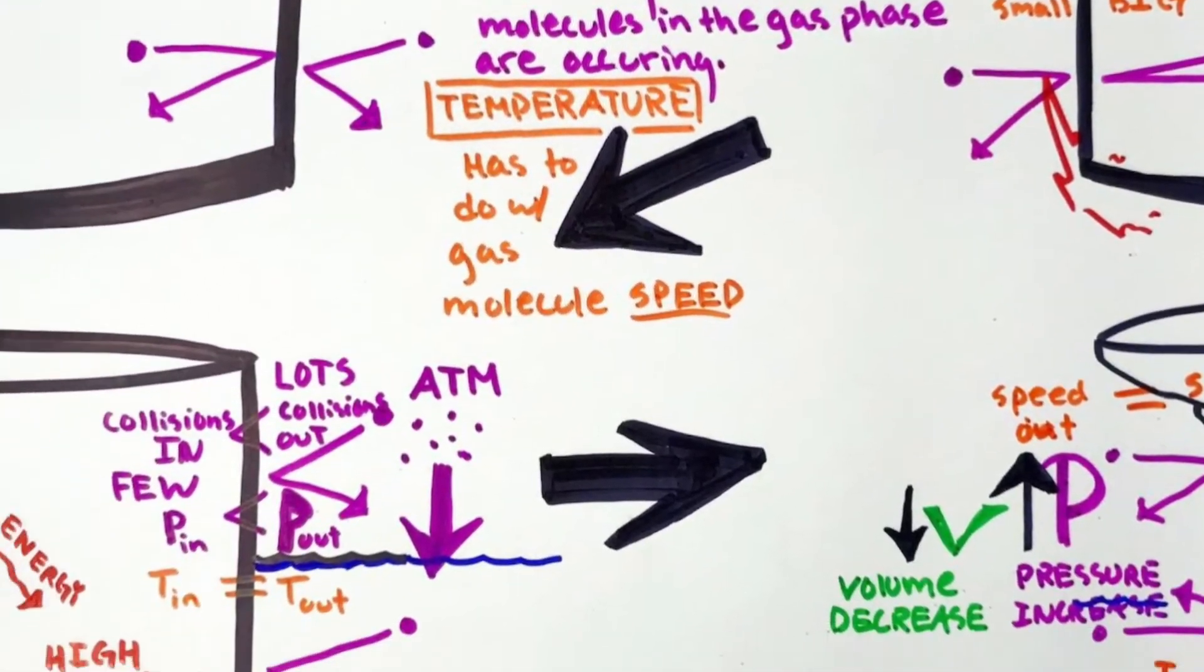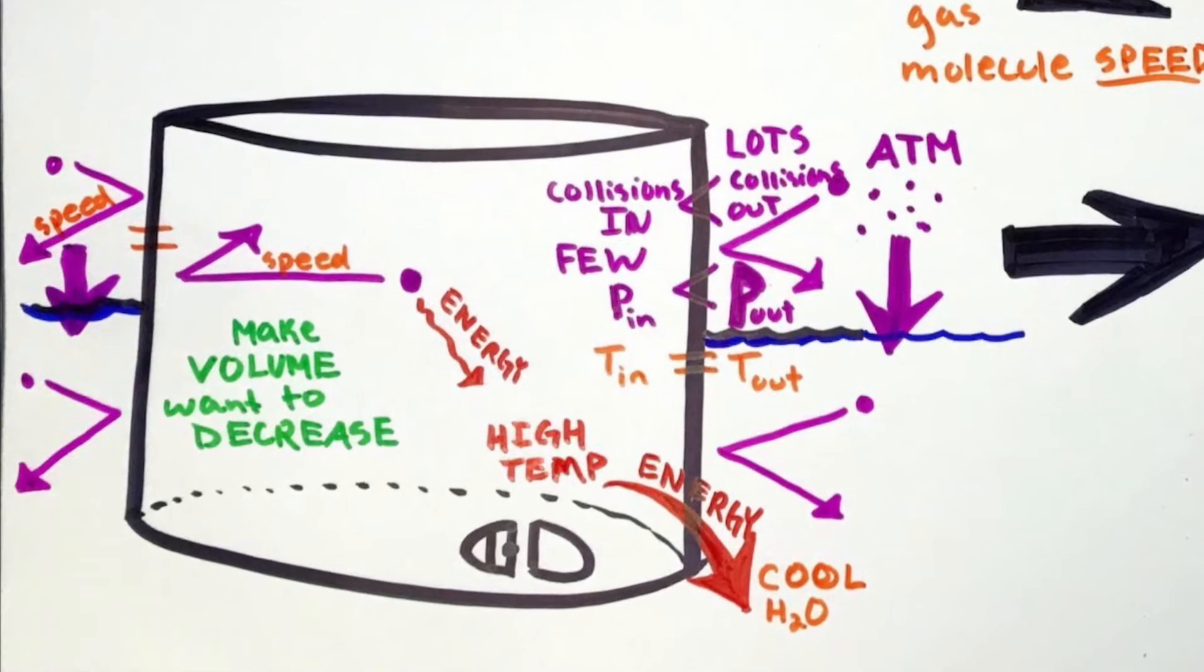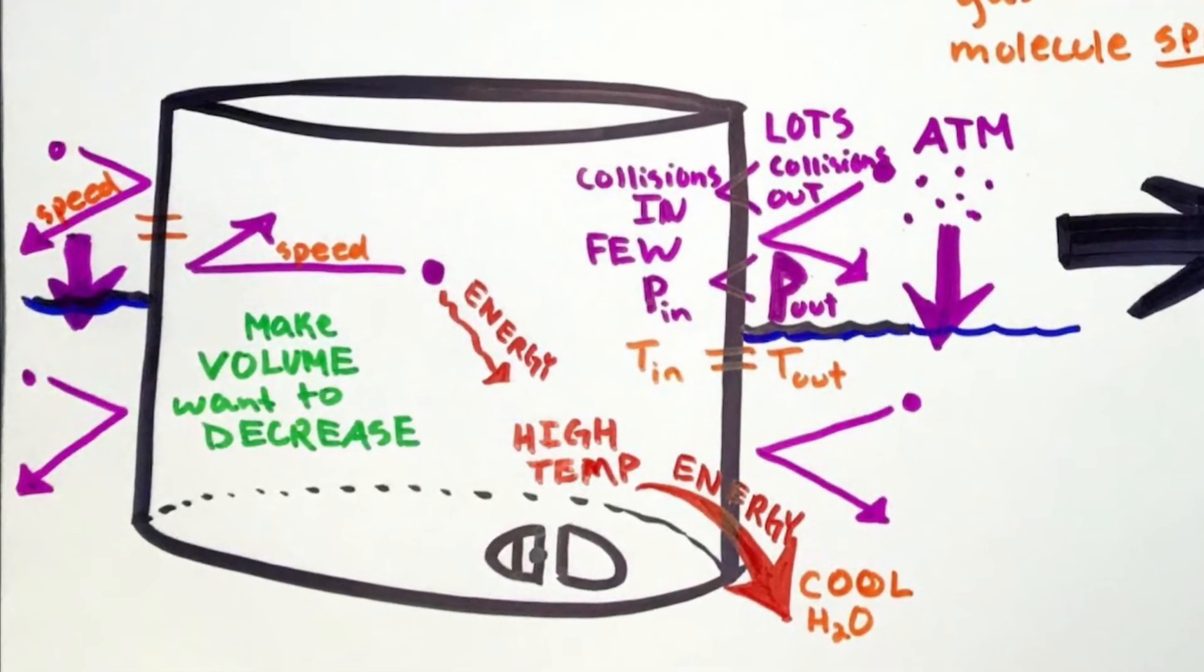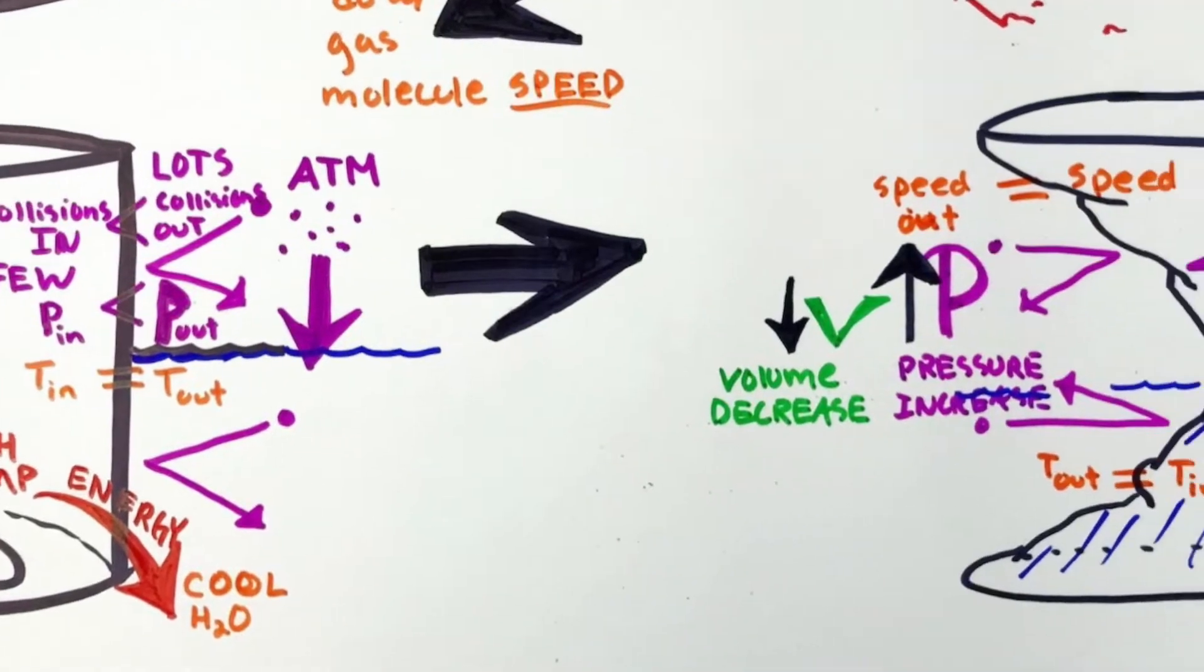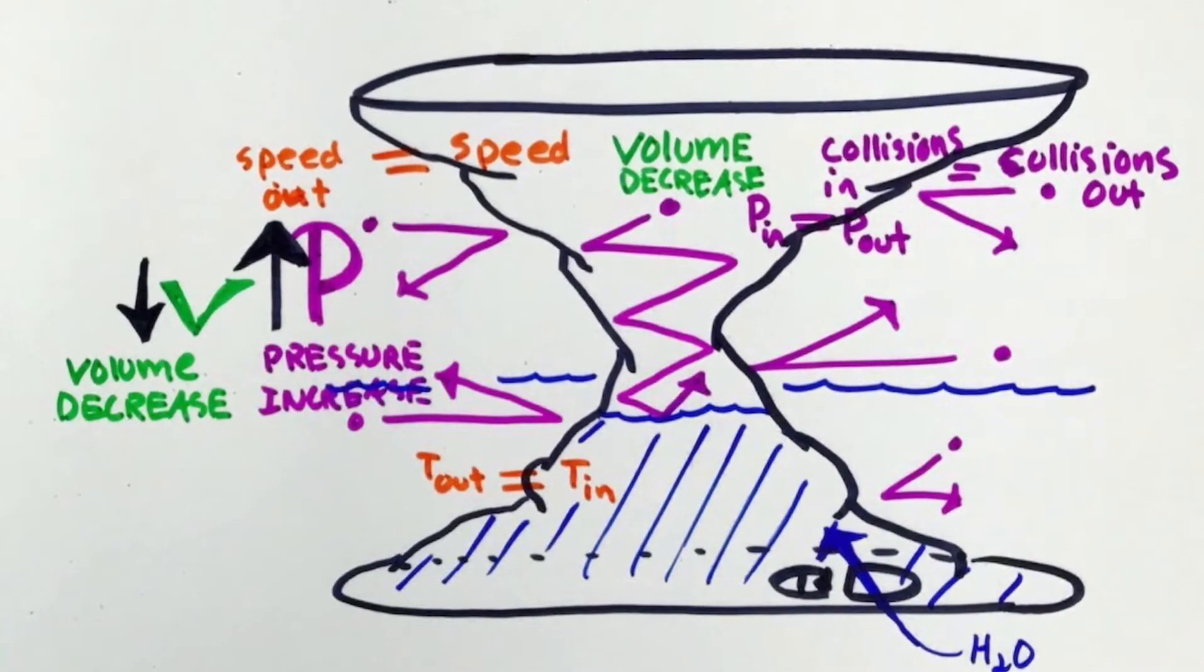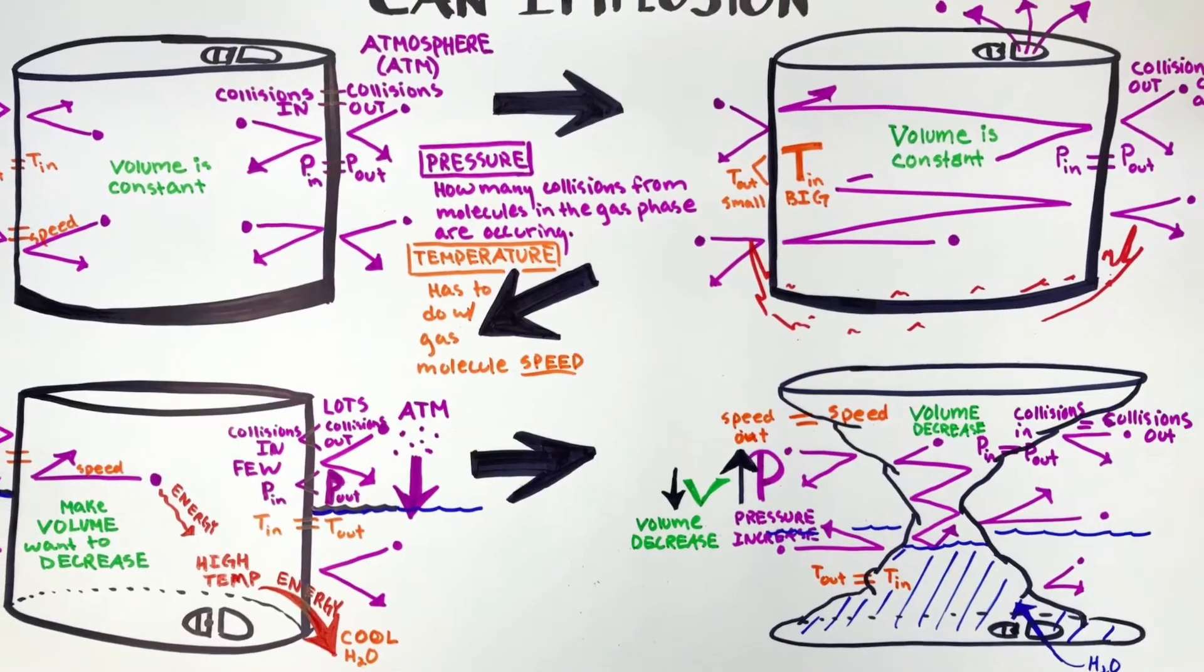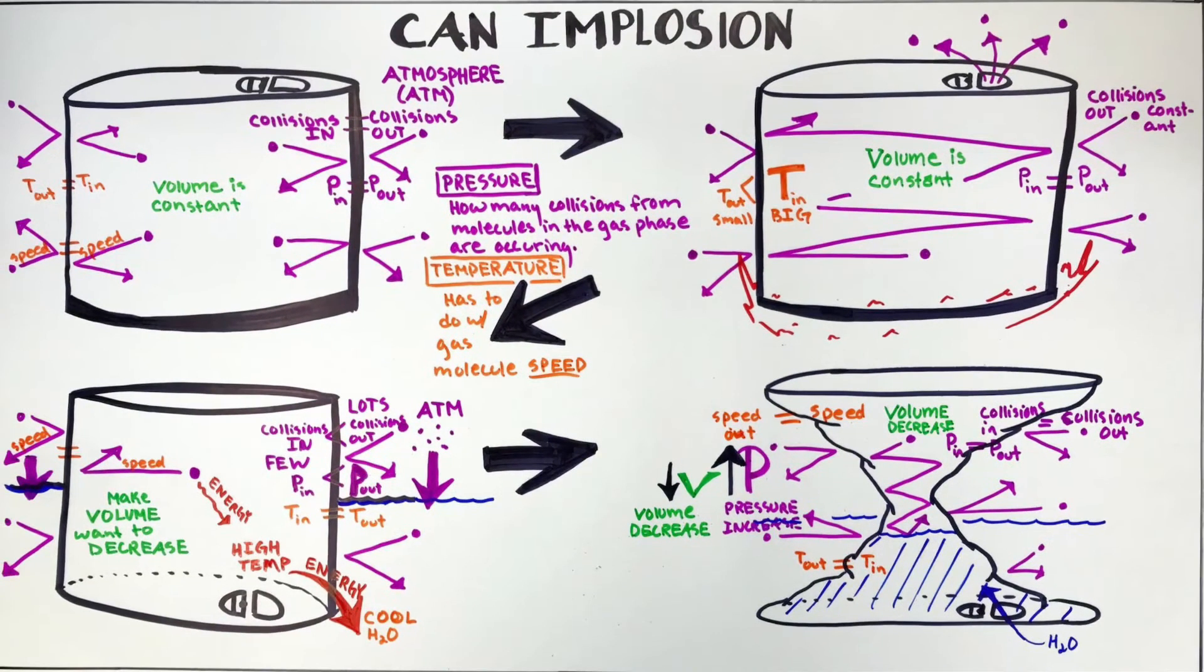And then we had energy leave the system, and so our gas molecule slowed down and it couldn't quite balance all the exterior collisions. And so water entered in, the can crushed, and that decrease in volume worked to increase the pressure. I mean, if I missed something important, let me know down in those comments. Maybe you'll get that in later. And hopefully crushing cans is a little more exciting for you now.